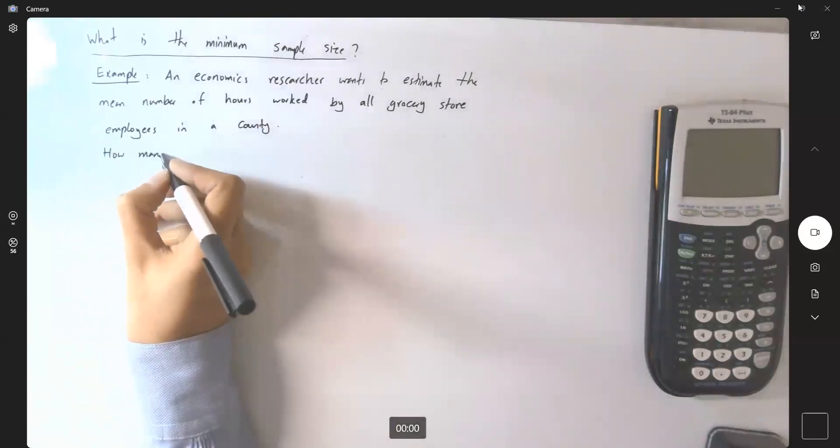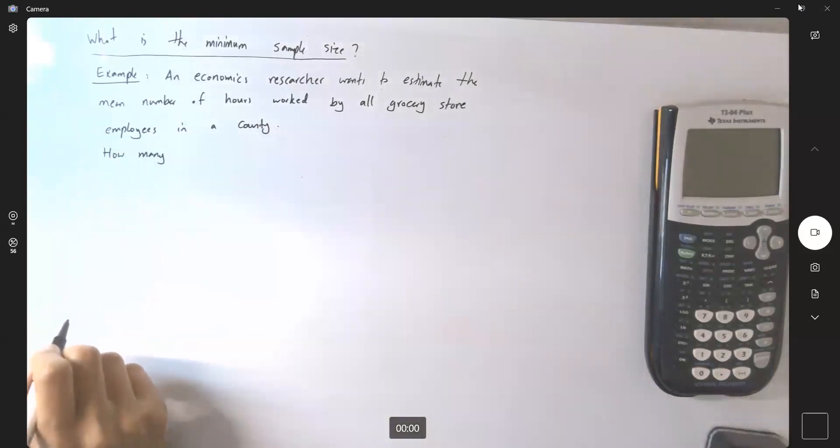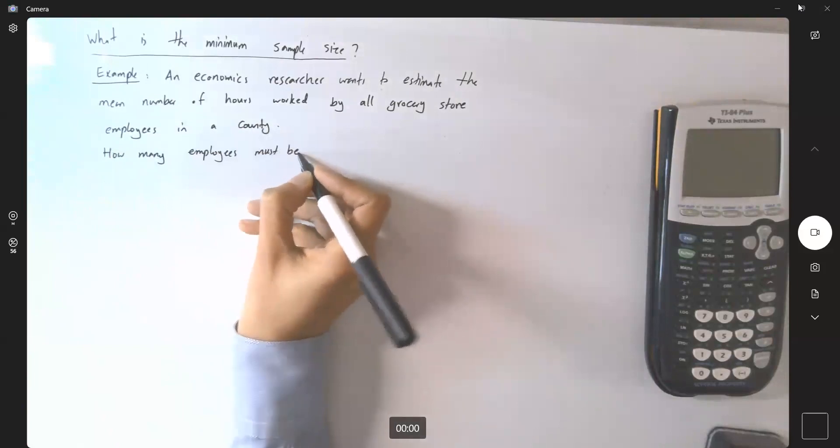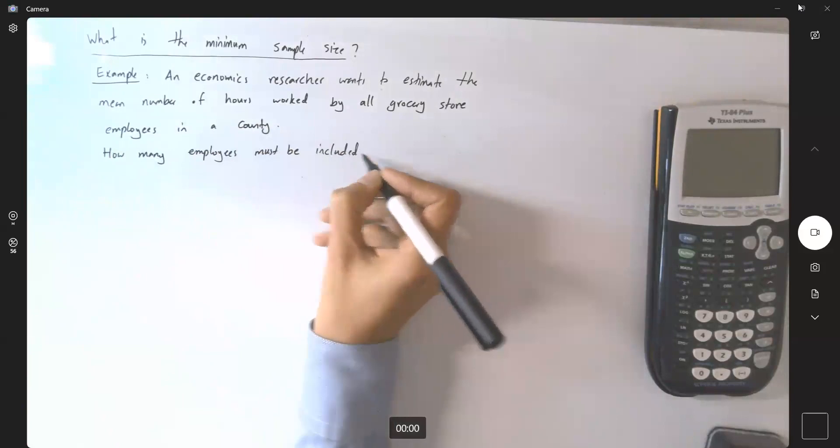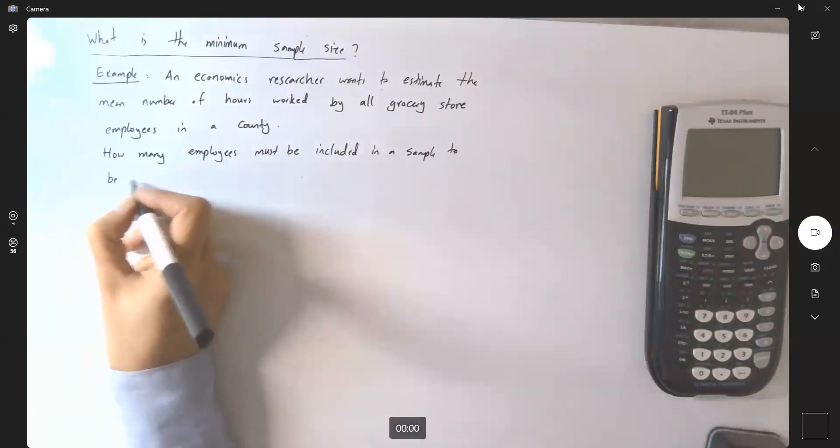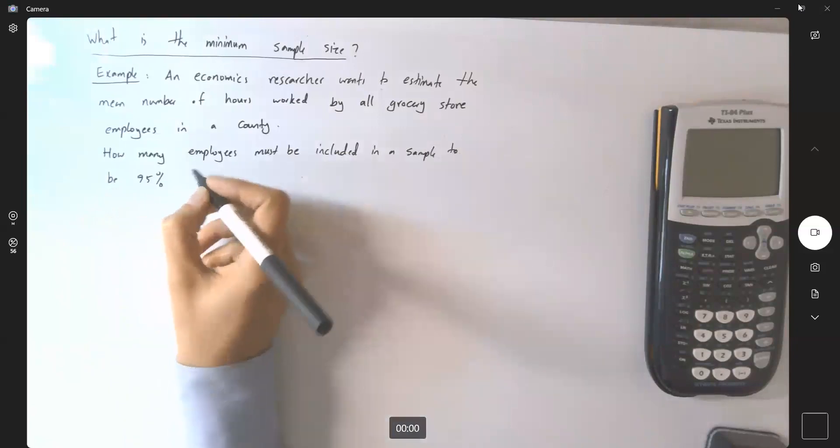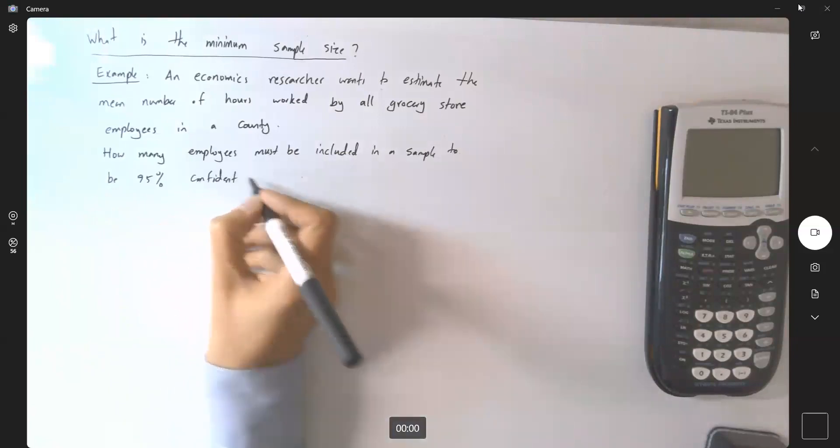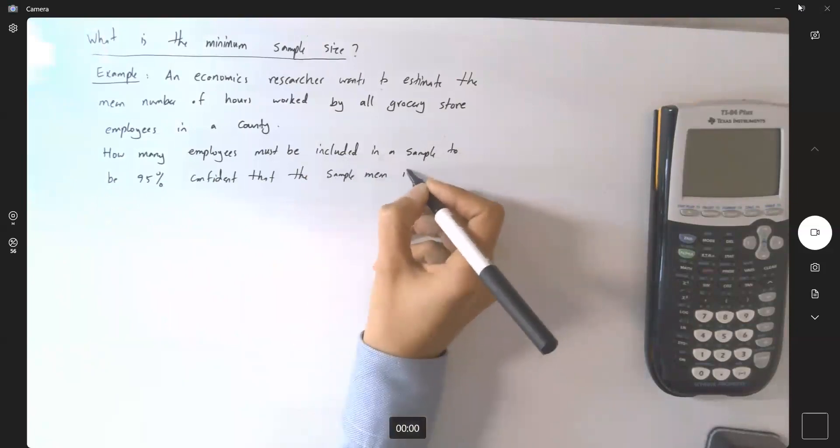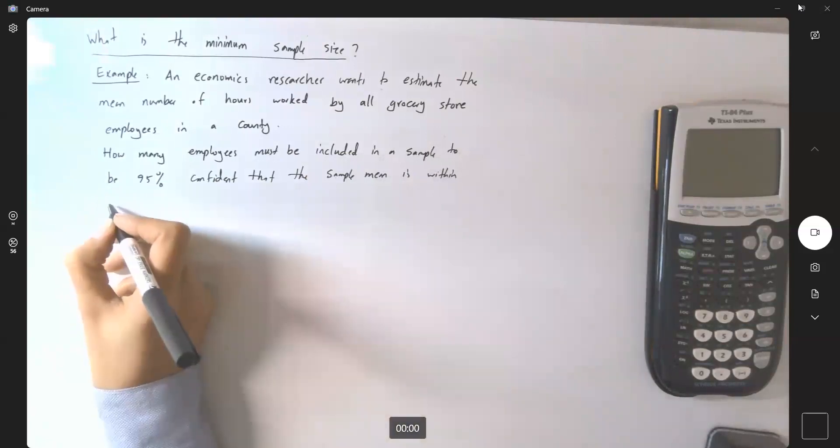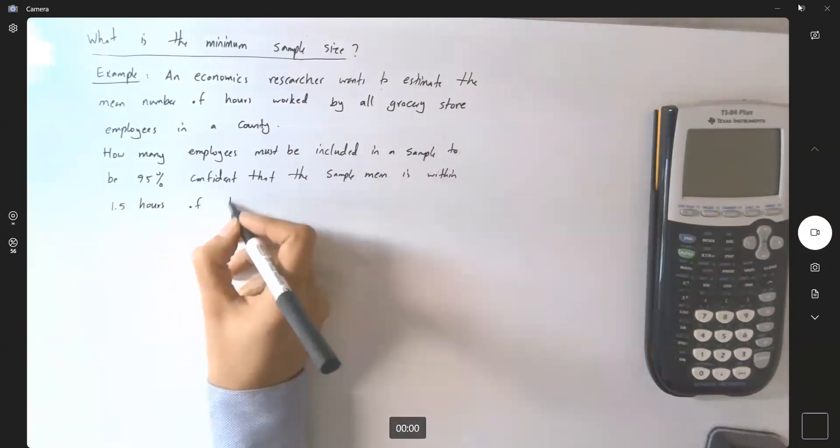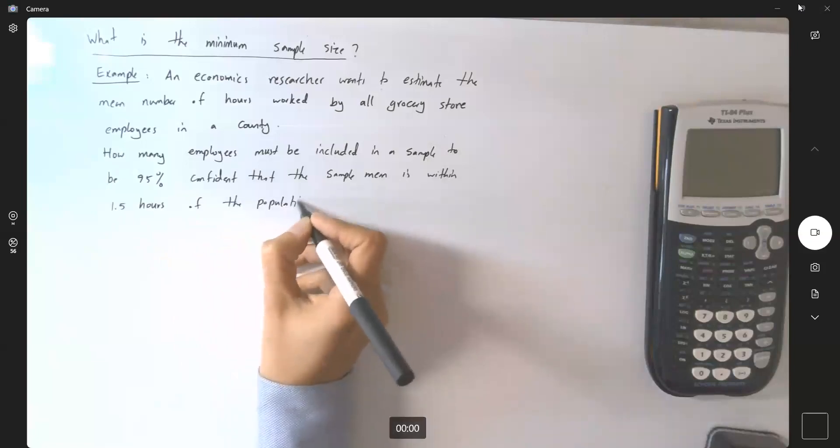How many? So this is the question that you're going to answer. How many employees must be included or selected in a sample to be 95% confident that the sample mean is within 1.5 hours of the population mean?